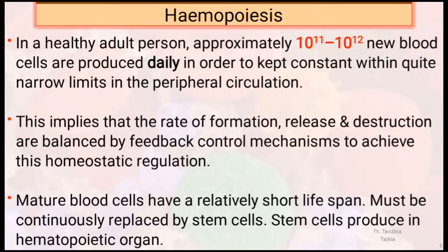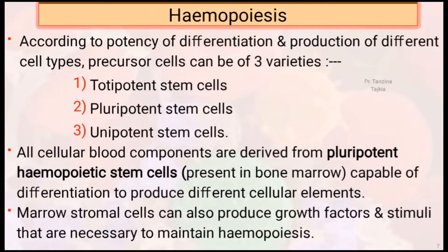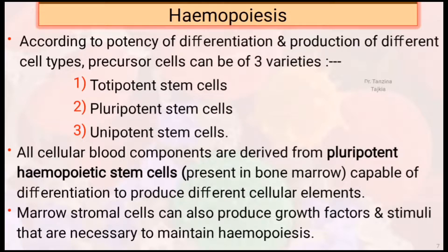Mature blood cells have a relatively short lifespan and must be continuously replaced by stem cells. Stem cells are produced in hematopoietic organs. According to the potency of differentiation and production of different cell types, precursor cells can be of three variants: totipotent, pluripotent, and unipotent stem cells. All cellular blood components are derived from pluripotent hematopoietic stem cells, which are present in the bone marrow. They are capable of differentiation to produce different cellular elements.